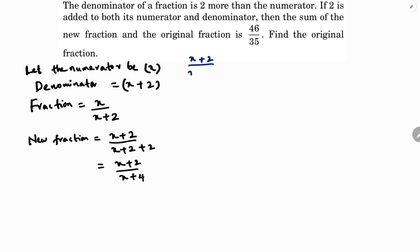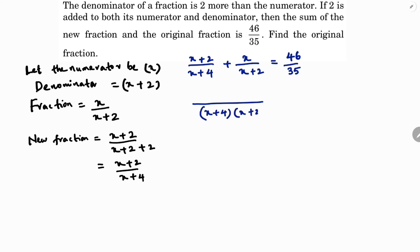So (x+2)/(x+4) + x/(x+2) = 46/35. Taking the LCM, which is (x+4)(x+2): for the first term multiply by (x+2), giving (x+2) squared, and for the second term multiply by (x+4).